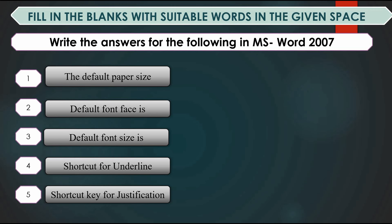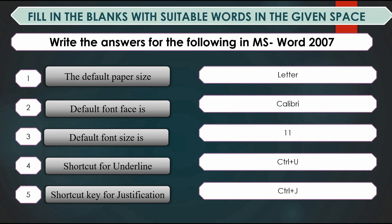Write answers for the following in MS Word: default paper size, font face, font size, shortcut key for underline, shortcut key for justification. Answers: default paper size is Letter, font face is Calibri, font size is 11, underline shortcut is Ctrl+U, justification shortcut is Ctrl+J.